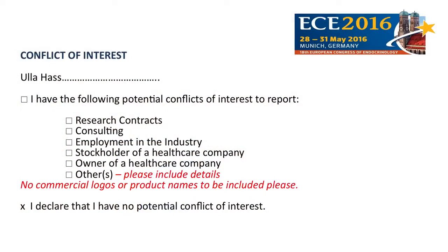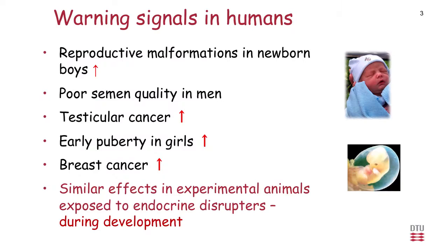I have no conflict of interest. My group has worked for more than 10 years looking at mixtures. This comes from epidemiological warning signals in humans: reproductive malformations in newborn boys are going up, many countries have poor semen quality in men, testicular cancers seem to be on the rise, there are signs of early puberty in girls, and breast cancer seems to be on the rise. We don't know what's behind this, but if we expose experimental animals to endocrine disruptors during development, we see the same kind of effects.